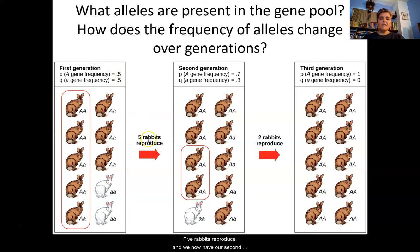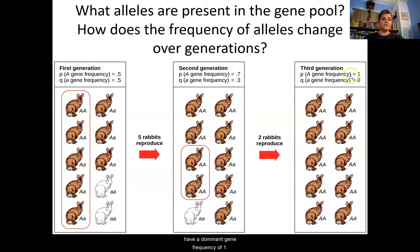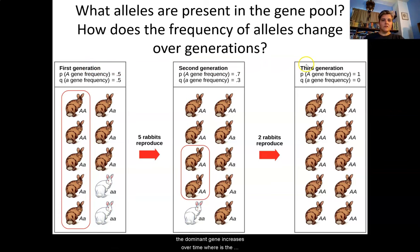Five rabbits reproduce and we now have our second generation. The dominant gene frequency has increased to 70%, or 0.7, and the recessive gene frequency has decreased. Then two rabbits from this generation reproduce and we have a third generation, where the dominant gene frequency is 1 and the recessive gene frequency is 0 — there are no recessive alleles in this third generation. So the dominant gene increases over time while the recessive allele decreases.